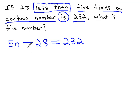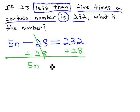This equation we can solve quickly by adding 28 to both sides. When we do, we get 5n equals 260. And then finally, we can divide both sides by 5 to get our number, 52.